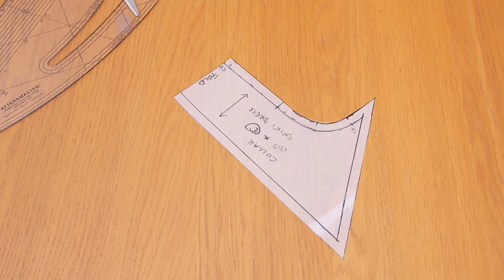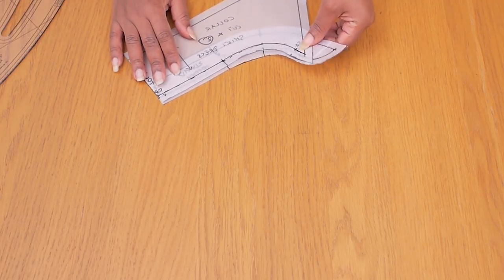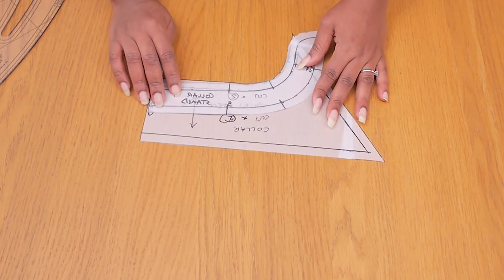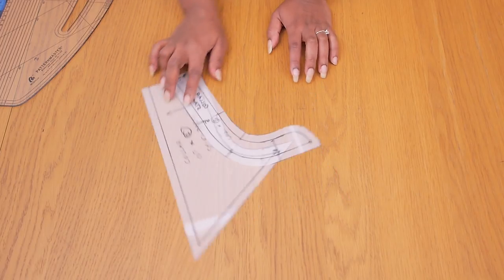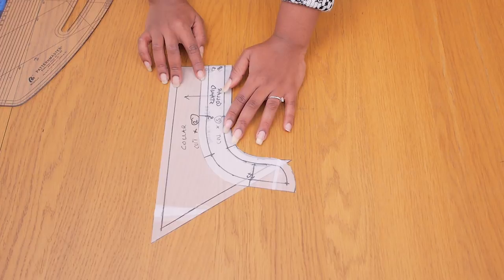So this is the collar all done. I just cut it out so we have it ready to use and it will be connected to the collar stand along this edge. So when I'm doing the sewing tutorial, you will see how these pieces sort of merge together, how they are connected and how many you need to cut.